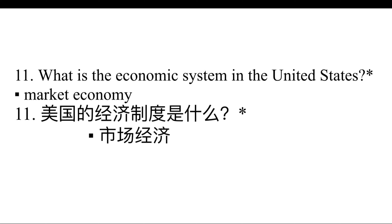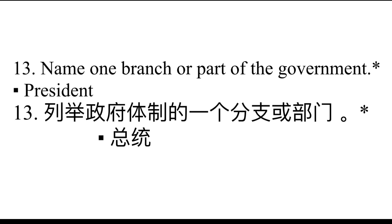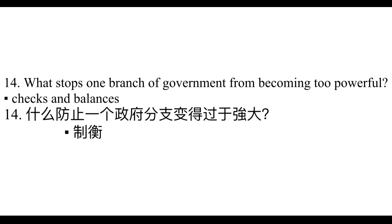What is the economic system in the United States? Market economy. What is the rule of law? Everyone must follow the law. Name one branch or part of the government. President. What stops one branch of government from becoming too powerful? Checks and balances.